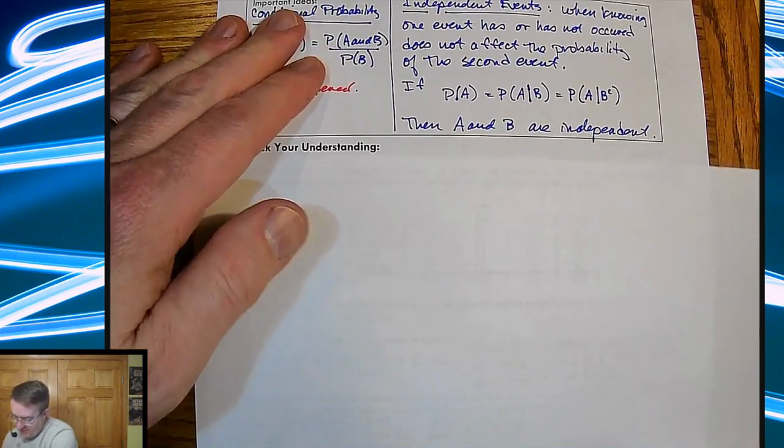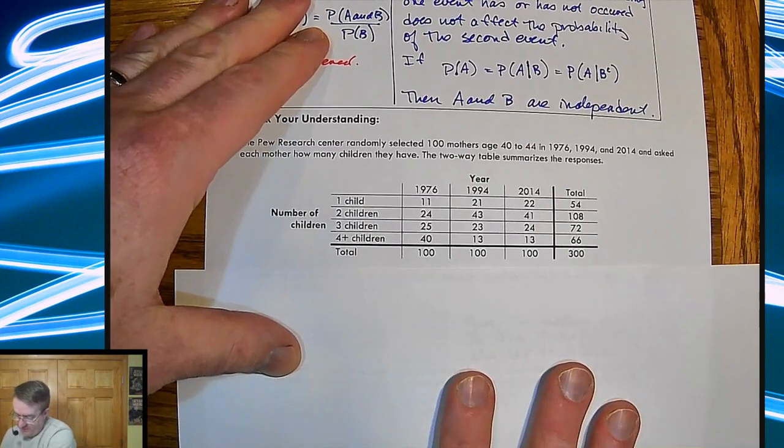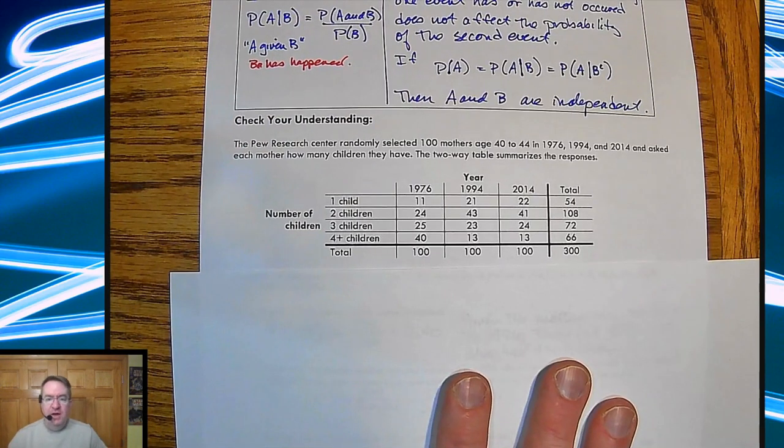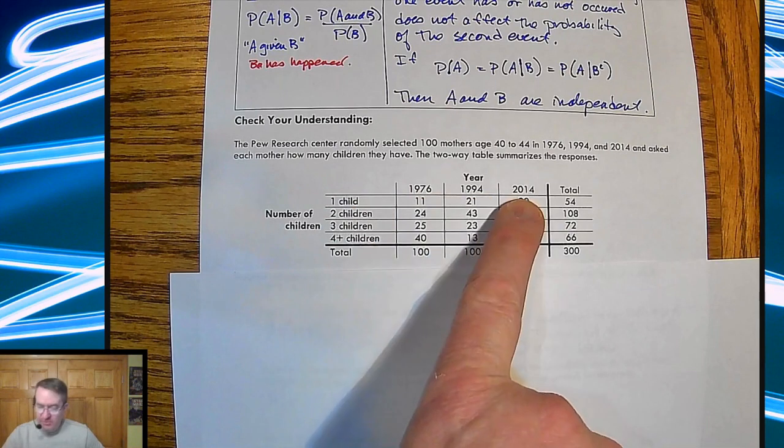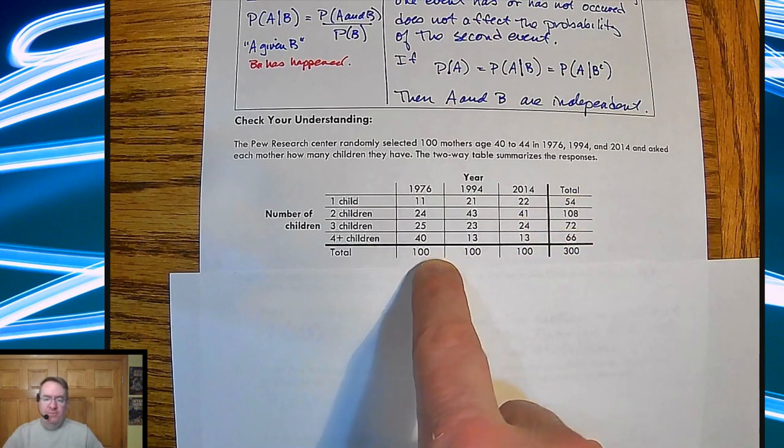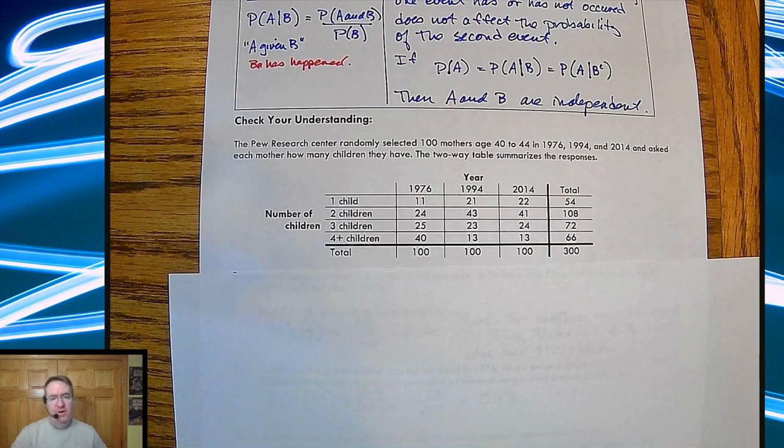All right, this is the place. So here's the situation. There's a survey. 100 mothers, ages from 4 to 44 in 1976, 1994, and 2014, and asked them how many children they have. The data is down below in two ways. Number of children down here, years across the top, totals here. Some questions down below. Hit pause. Answer them. Come on back, and we'll talk about it.